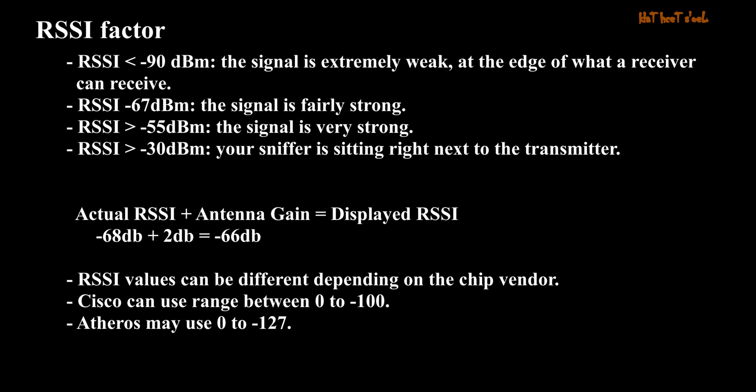RSSI Factor: When RSSI is less than minus 90 dBm, the signal is extremely weak, at the edge of what a receiver can receive. When RSSI equals minus 67 dBm, the signal is fairly strong. When RSSI is greater than minus 30 dBm, your sniffer is sitting right next to the transmitter. Actual RSSI plus antenna gain equals displayed RSSI — for example, minus 68 dB plus 2 dB equals minus 66 dB.